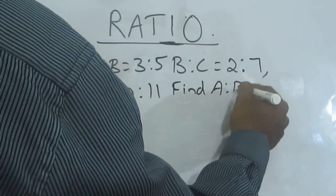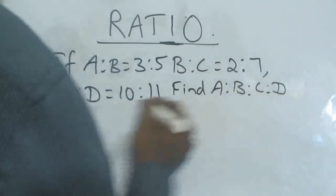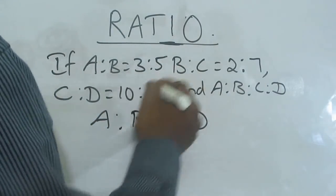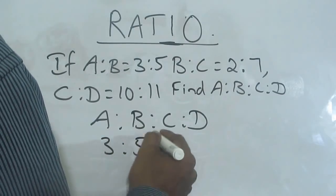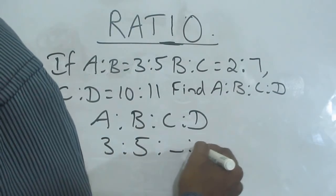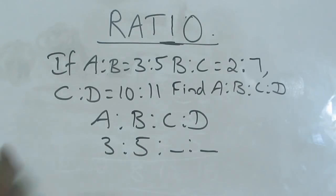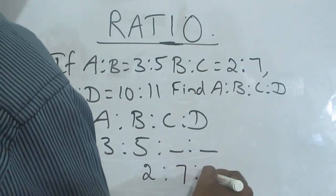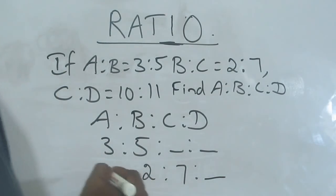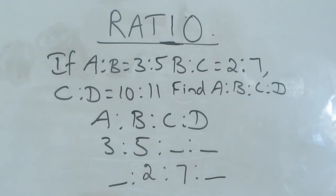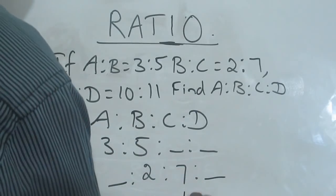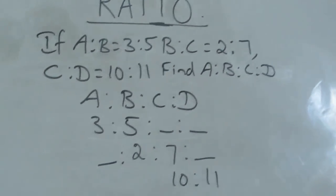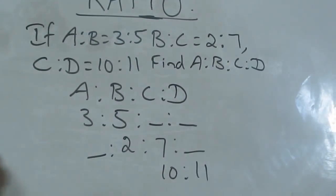Find A is to B is to C is to D. What is given in the first line? 3 is to 5, A is to B is given — so I don't know C, I don't know D. What is given in the second line? B is to C, that is 2 is to 7. I don't know D and I don't know A. What is given in the third one? C is to D is 10 is to 11. So I don't know A and B.